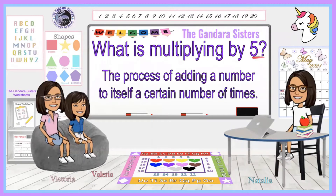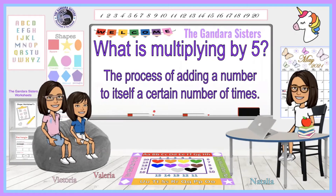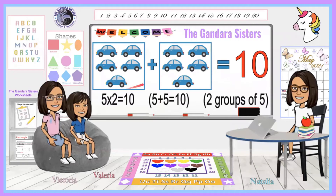What is multiplying by five? The process of adding a number to itself a certain number of times. What does that all mean? Here we have an example with cars. So we have one, two, three, four, five in one group, and one, two, three, four, five in another group. And we can write this three ways. The first way we can write it is five times two, because there's five cars and there's two groups, and that'll give us ten.